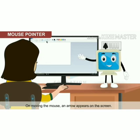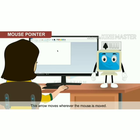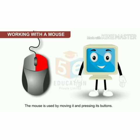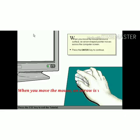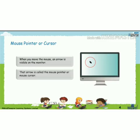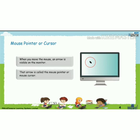On moving the mouse, an arrow appears on the screen. This arrow moves wherever the mouse is moved. The mouse is used by moving it and pressing its buttons. When you move the mouse, an arrow is visible on the monitor — what is it called? Yes, the cursor and the pointer. That arrow is called the mouse pointer or mouse cursor. You can see in the picture — this is a mouse cursor, also called a mouse pointer.